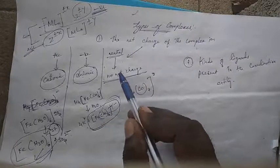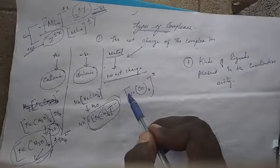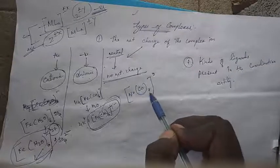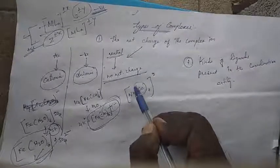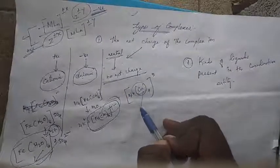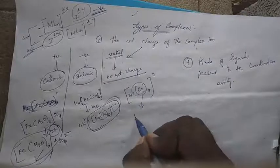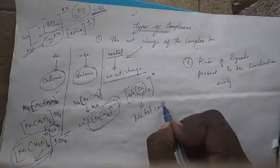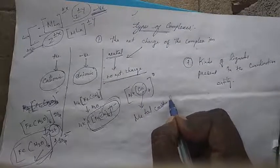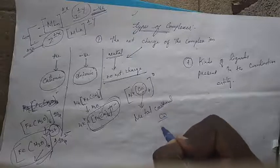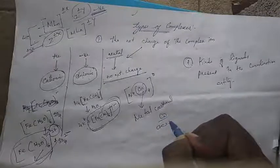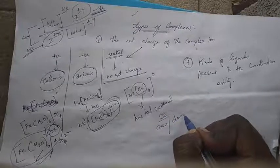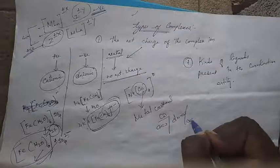It is a neutral complex — Ni(CO)4. CO means metal carbonyls. The metal carbonyls — CO acts as both donor and acceptor. Ni(CO)4 has no net charge, therefore it is a neutral complex.